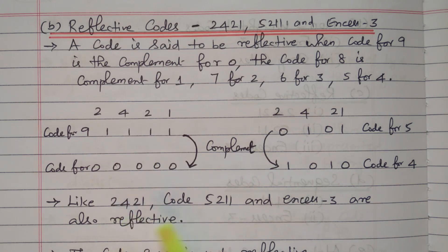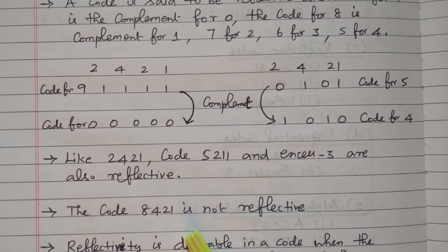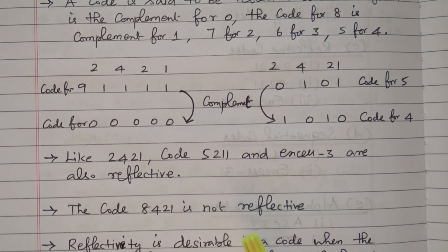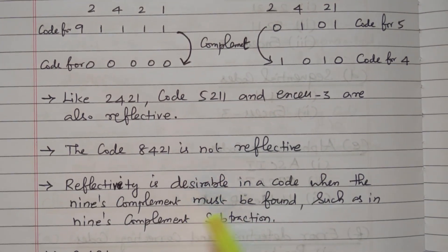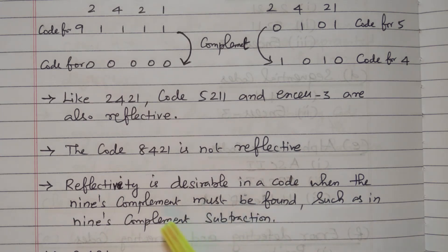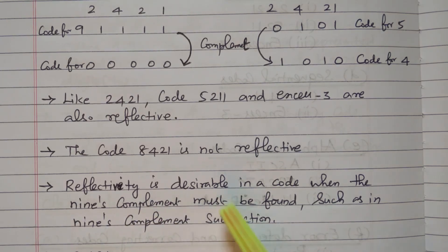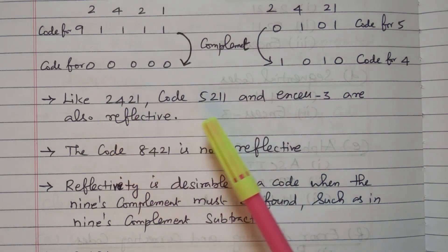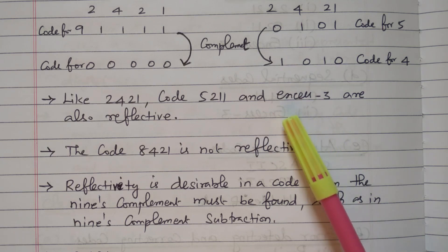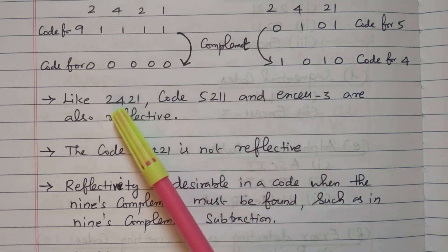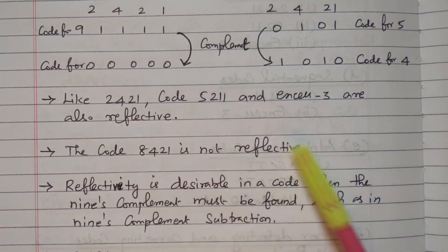So 2421, 5211, and XS3 codes are reflective. Only these three codes come under the reflective codes. The code 8421 is not a reflective code. Reflective code is desirable when the nine's complement must be found, such as in nine's complement subtraction. Where we need nine's complement — that is in nine's complement subtraction — we can use these reflective codes: 2421, 5211, and XS3. Now we will see these codes one by one in detail.